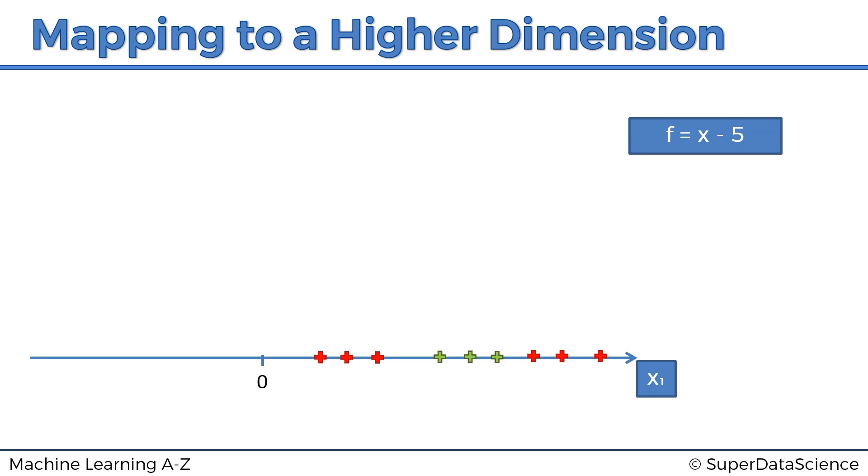So to subtract five from our data set. And that is going to move everything to the left. So basically now, this is what the result looks like. So if you take five, you subtract five from X, you'll get, you know, like these ones will go into negative, these ones will stay in positive.